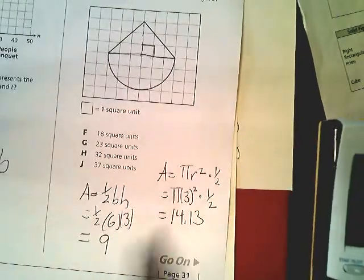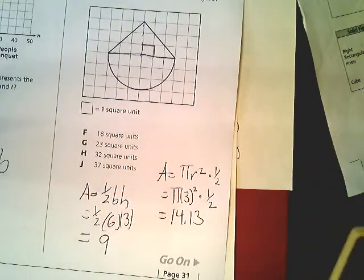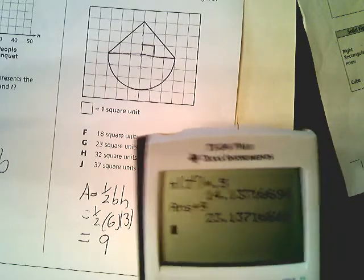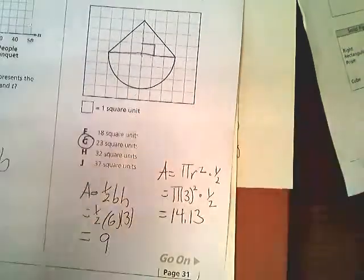And then I can just add these two numbers together, and it gives you something like 23 square units.